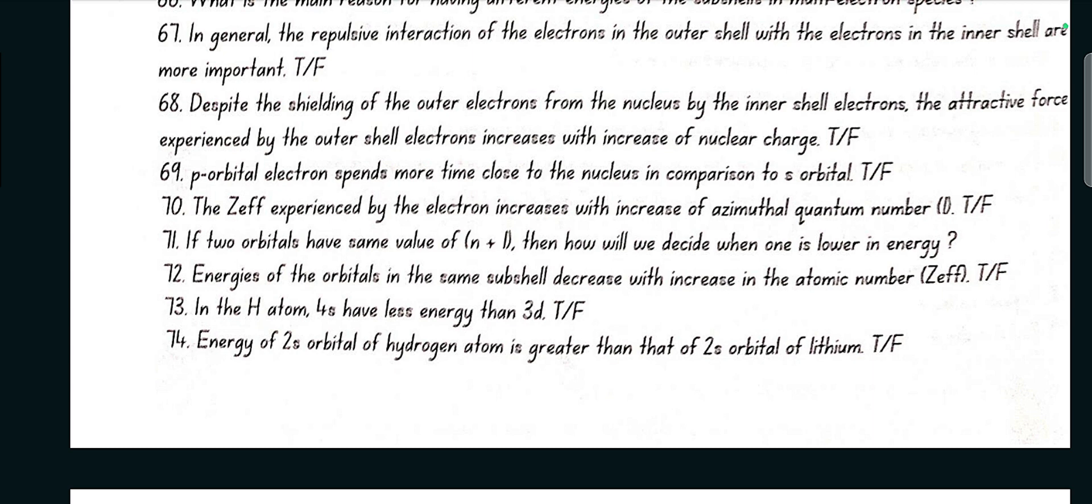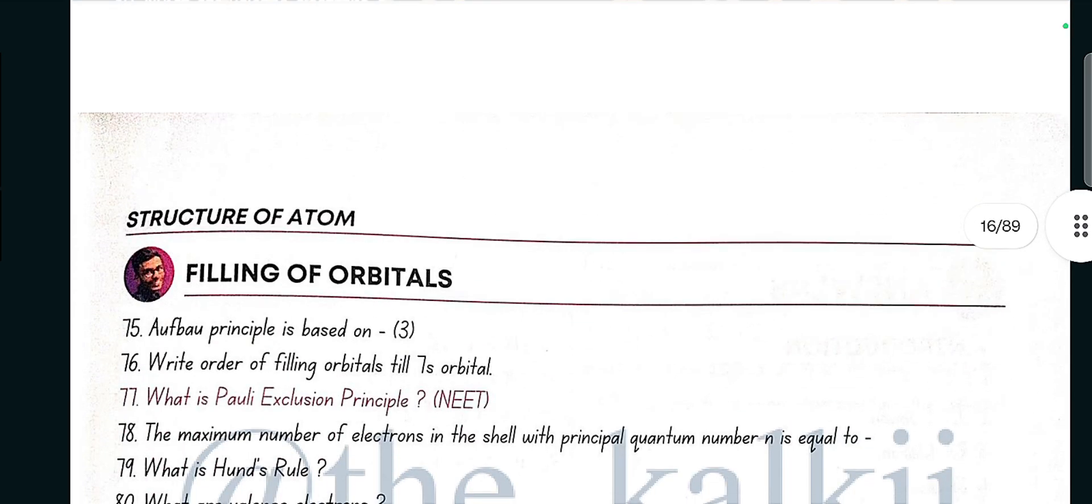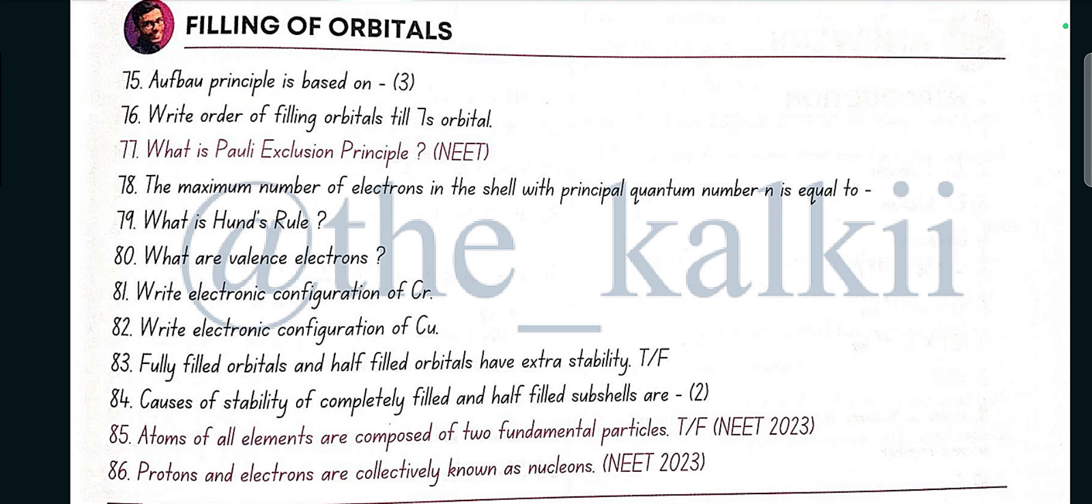In the hydrogen atom, 4s has less energy than 3d? No, false. Energy of 2s orbital of hydrogen atom is greater than that of 2s orbital of lithium? Yes, true. Aufbau principle is based on Pauli's exclusion principle, the Hund's rule of maximum multiplicity, and the relative energies of the orbitals.